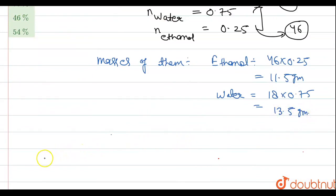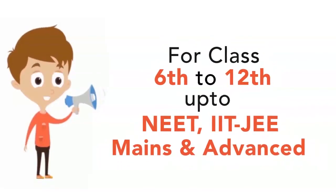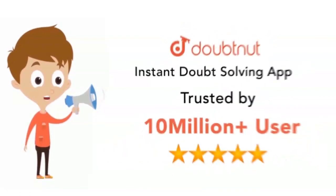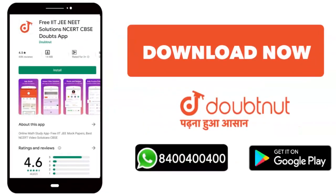Now percentage concentration of ethanol by weight of mixture is equal to 11.5 divided by total weight, that is 11.5 plus 13.5, into 100. This is nothing but 46 percent. Option C is correct. Thank you very much.